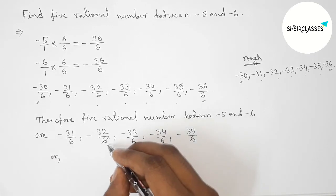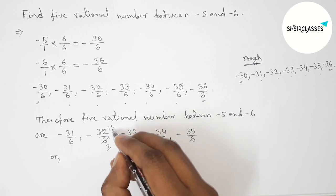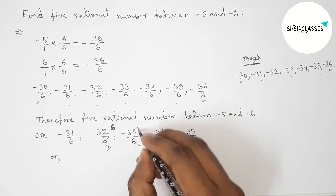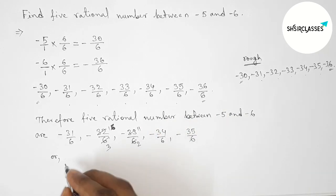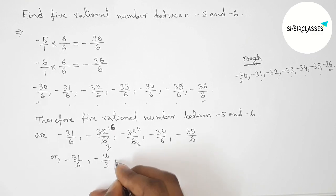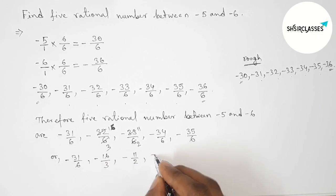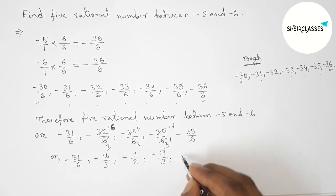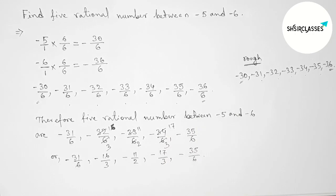Let me write down all the rational numbers again. If we divide both numbers by 2, then 17 by 3, then minus 35 by 6. That's all, thanks for watching.